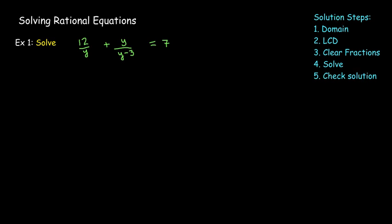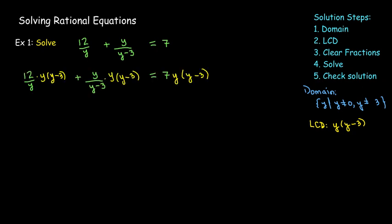Our domain for this equation is y cannot be 0 and y cannot be 3. The LCD, I only have two denominators that can't be factored, so the LCD is their product, y times y minus 3. So I'm going to multiply each term by y times y minus 3, including the 7. Even though it's not written as a fraction, I'm still going to multiply it because it's part of the equation. I have to multiply both sides by the same number.